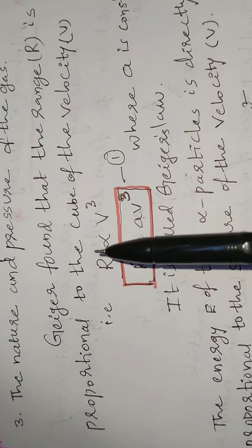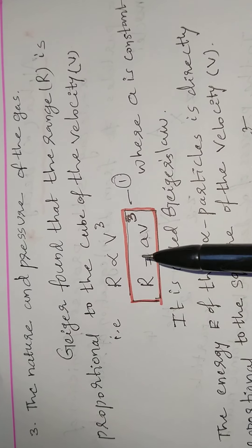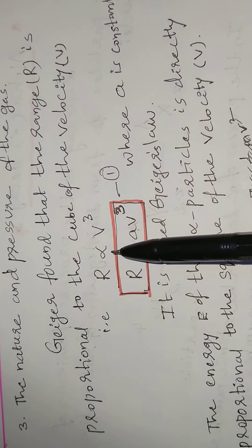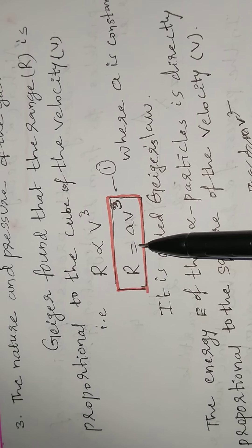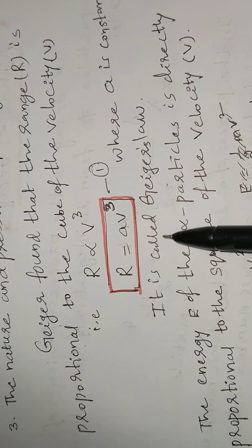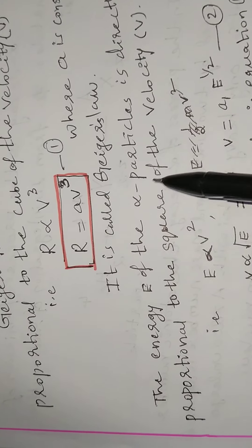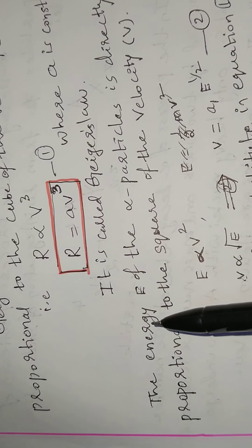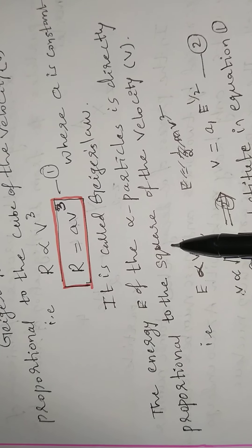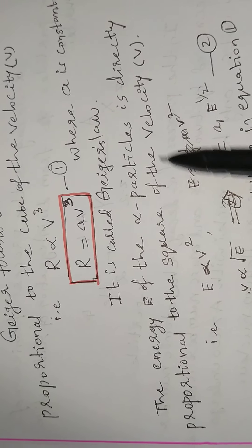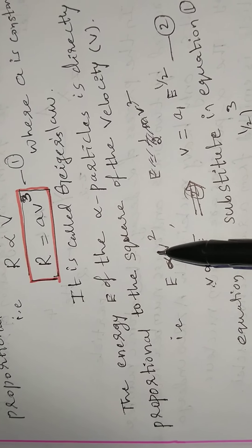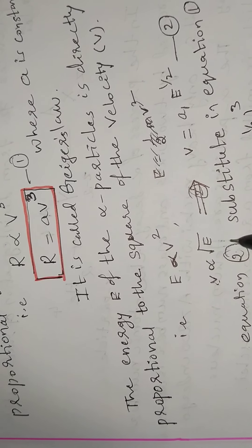Now considering the range and energy of alpha particles, removing the proportionality gives R = a·v³, where a is a constant. This is the Geiger law. Geiger also discovered that the energy of the alpha particle is directly proportional to the square of the velocity, that is E proportional to v², so v is proportional to the square root of E.